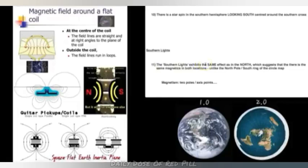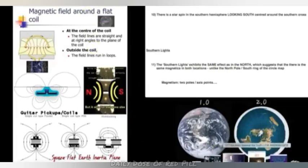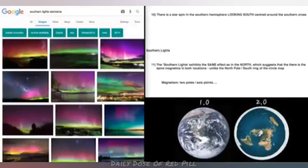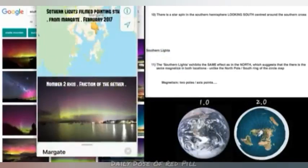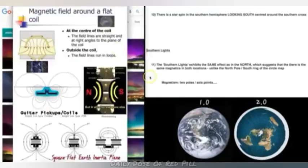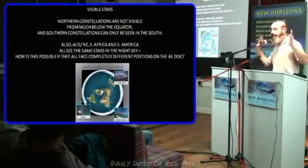The southern lights exhibits the same effect as in the north, which suggests that there is the same magnetics in both locations, unlike here where you have a ring. For those who aren't aware, the southern lights filmed from Margate in Tasmania, south of Australia, looking down. The fact that the northern and southern lights are identical, pretty much, suggests that there's an identical effect going on here. The biggest one is the two-pole rotation of stars, north and south.